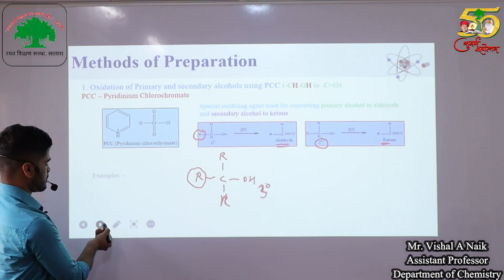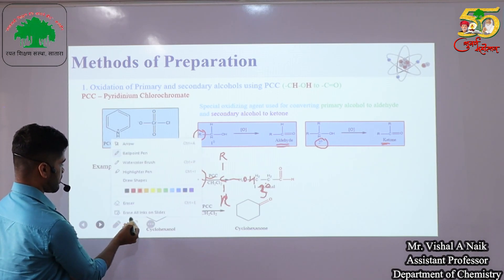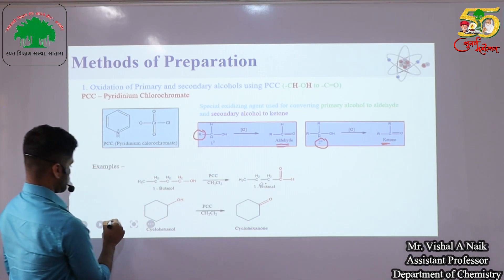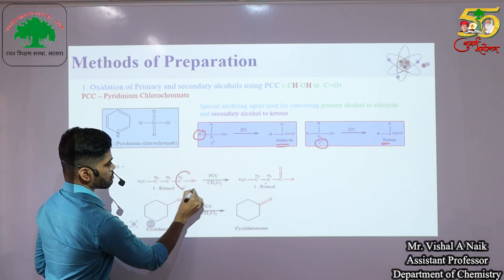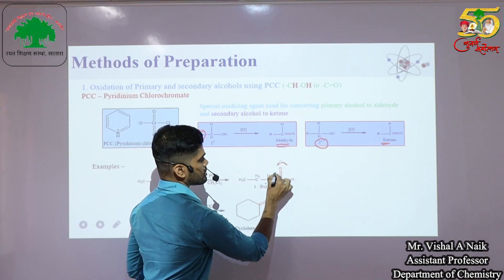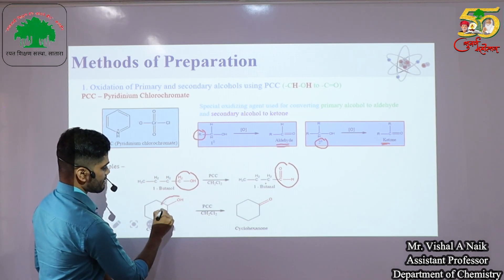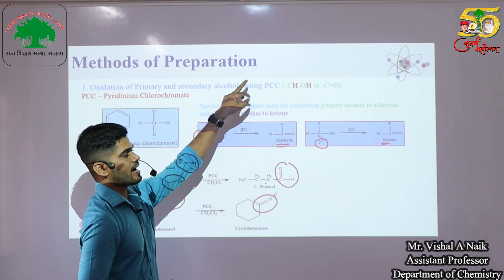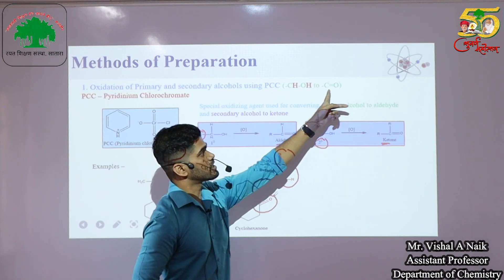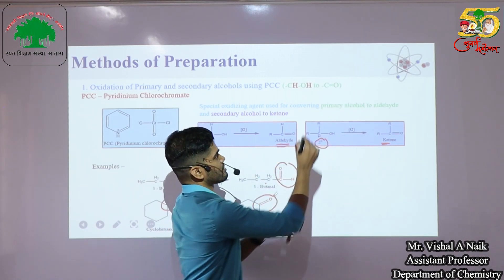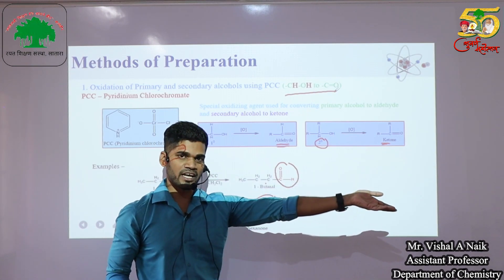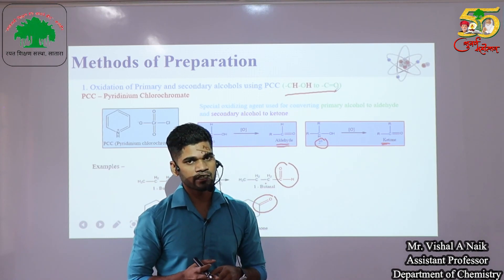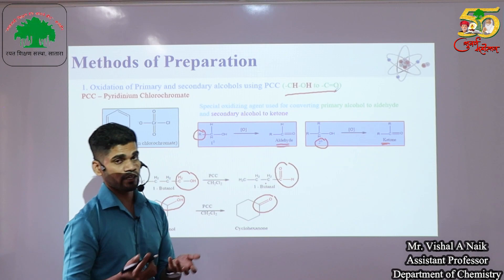PCC converts primary alcohols into aldehydes and secondary alcohols into ketones. The CH₂OH group gets converted into C=O, meaning the CHOH group gets converted into C=O. The hydrogens get replaced — that is why it is called oxidation. PCC is a selective oxidizing agent used to prepare aldehydes and ketones. This is the first method.